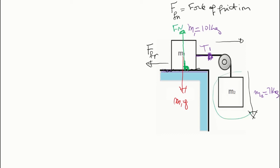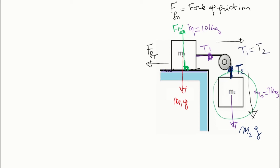We circle object M2 to see what pushes and pulls on it. We have the weight M2·G, and then we have tension T2 from object M1 pulling on M2. Remember, T2 will be identical in magnitude to T1 because the pulley is massless and there is no friction on the pulley. So T2 equals T1 — we just call it T, the tension in the cord.